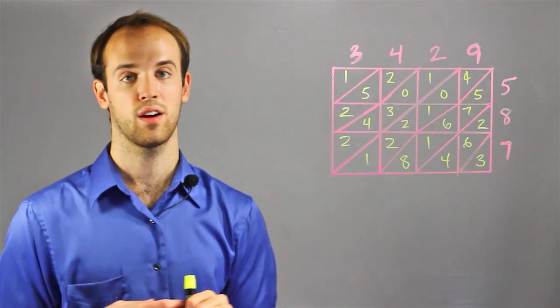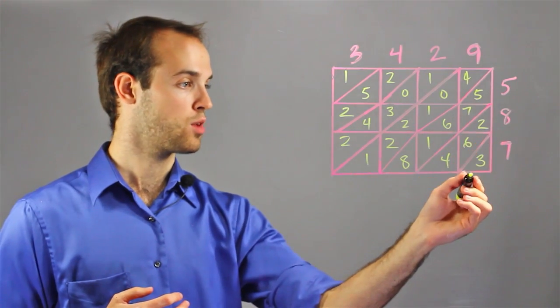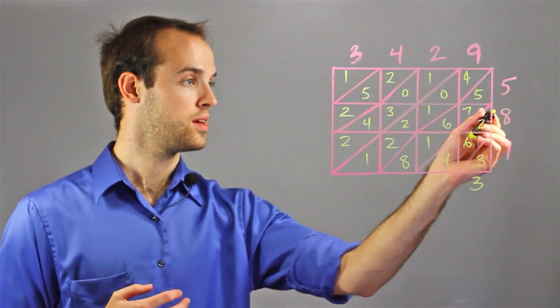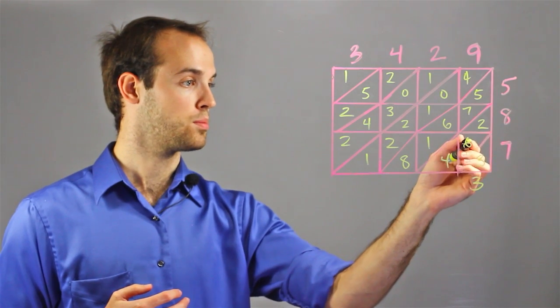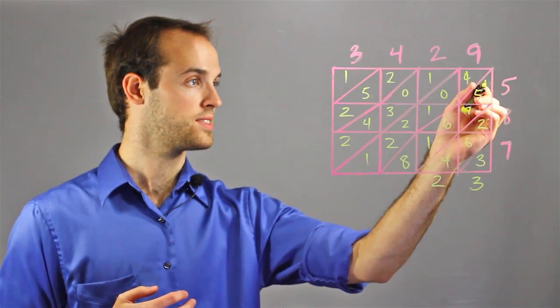And from there, all I have to do is add diagonally along the lines of lattice. So in this row I've got just 3. In this row I've got 6 plus 4 plus 2, which is 12. And I'm going to carry the 1 in the next diagonal.